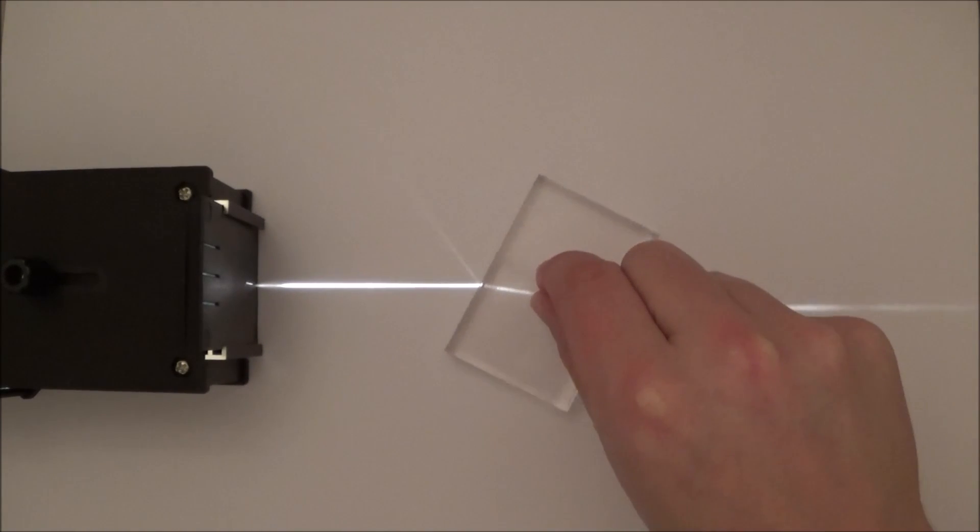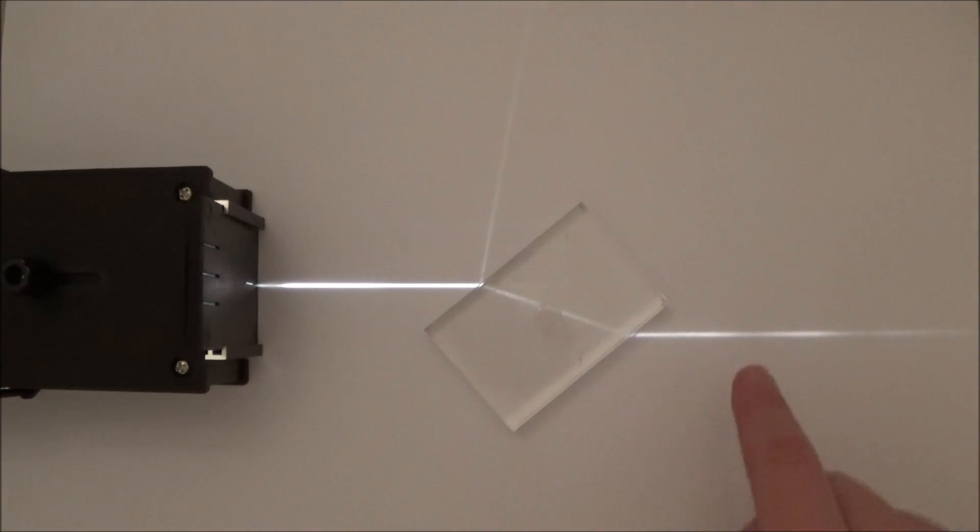As I rotate the block, what we see is a light inside that starts to bend. And this effect here is what we call refraction.